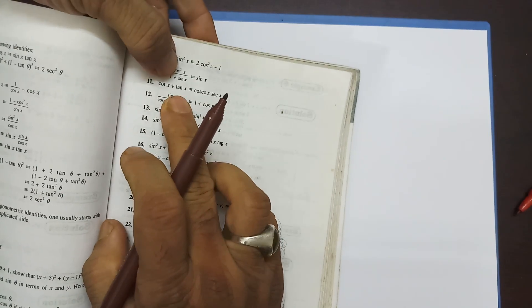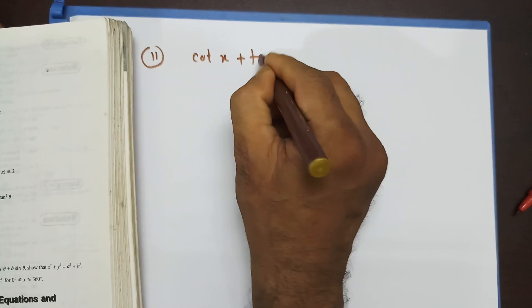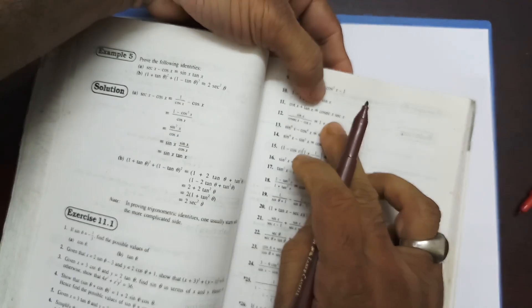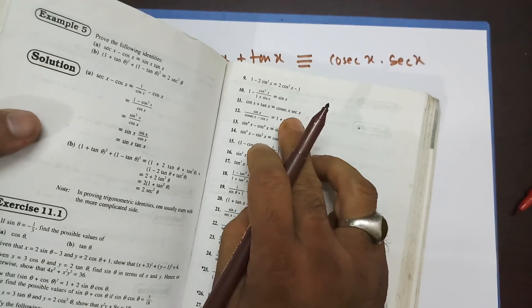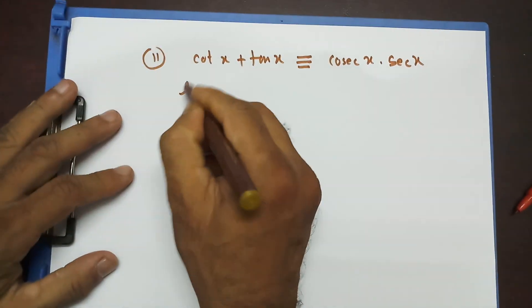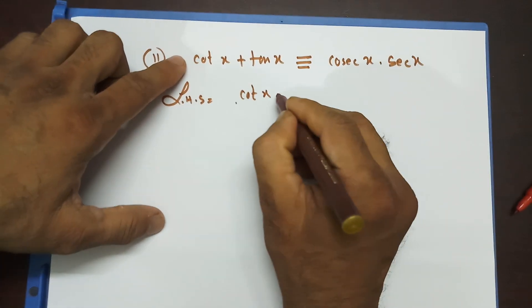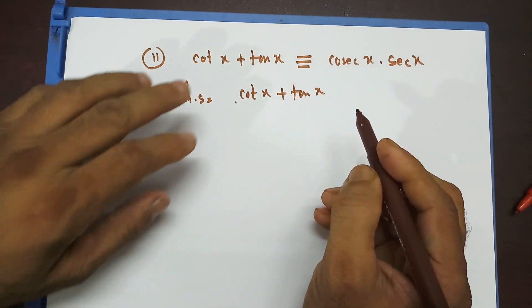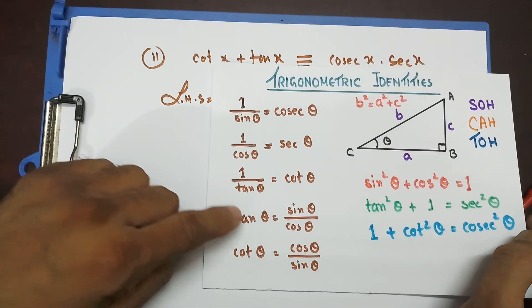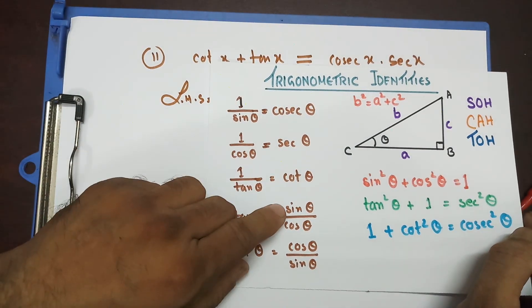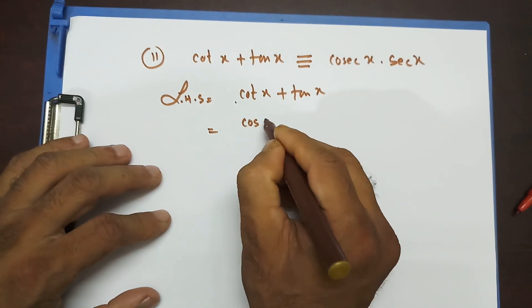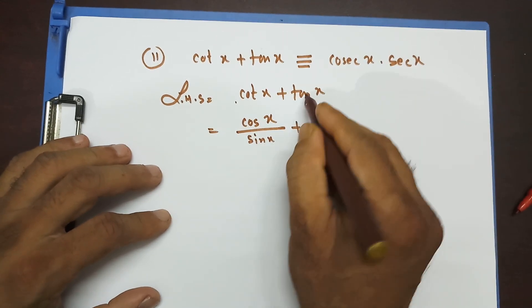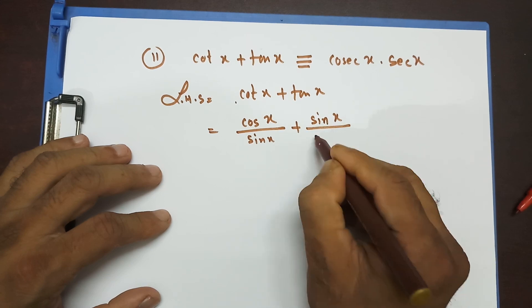Let's do question 11. Question 11 says cot x plus tan x is identical to cosec x times sec x. Left-hand side: cot x plus tan x. Remember — for tan and cot it's better to write tan as sin theta by cos theta, and cot as cos theta by sin theta. So I write cot x as cos x by sin x, plus tan x as sin x by cos x.